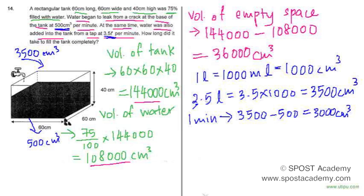Since the question asks how long would it take to fill the tank completely, the volume of the empty space is 36,000 and every 1 minute I can still fill up 3000 cm³ of water. To find the time taken, it will just be 36,000 which is the volume of the empty space divided by 3000 which is the amount of water that is filling in in 1 minute. And I will get 12 minutes.